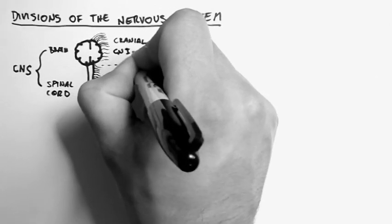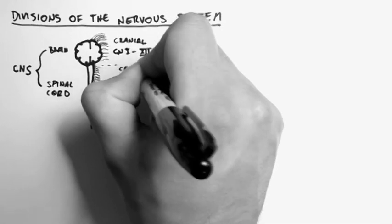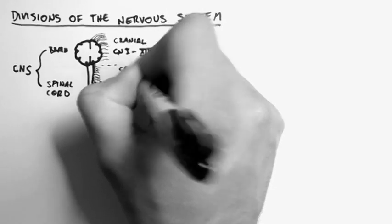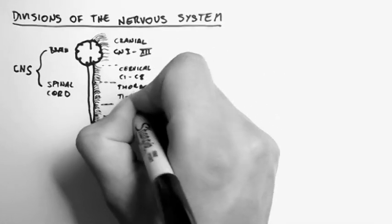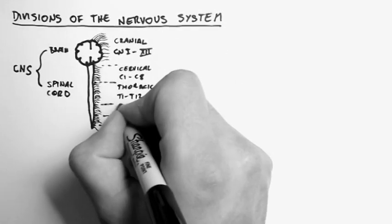The next set are called the cervical, and there's eight of those, C1 to C8. Then thoracic, there's 12, which we name T1 to T12.